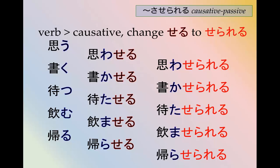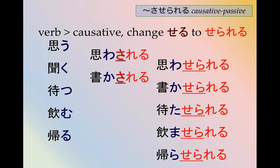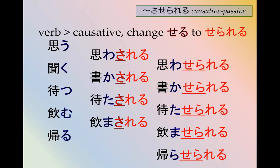There's also a shorter form. Instead of -serareru, you just say -sareru. So omoaserareru becomes omoasareru. Kakaserareru becomes kakasareru — a little easier to say. Mataserareru becomes matasareru. Nomaserareru becomes nomasareru. Kaeraserareru can also be kaeraserareru. Both mean the same thing — both are causative passive.